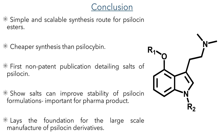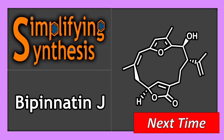Overall, this paper is an important step forward towards the clinical use of psilocin psychedelics. They developed a simple and scalable synthesis route for psilocin esters, which are easier and cheaper to make than psilocybin. They also give details on the stability of different salts of psilocin, which until now has been buried in the patent literature, and ultimately they lay the foundation for a large-scale manufacturing process of psilocin derivatives. That's everything for this video — join me in the next one, where we will be looking at the total synthesis of biponatin J.